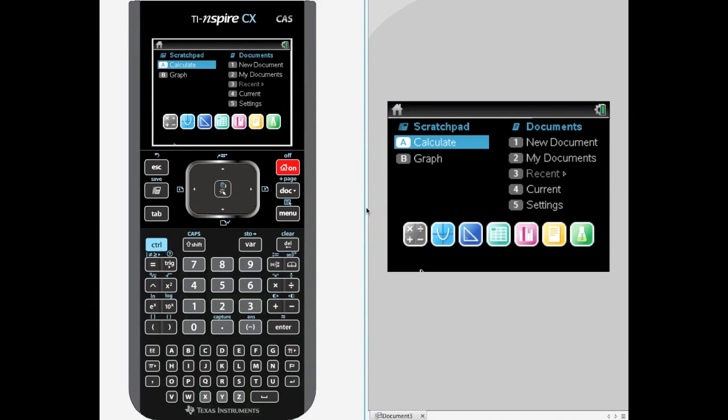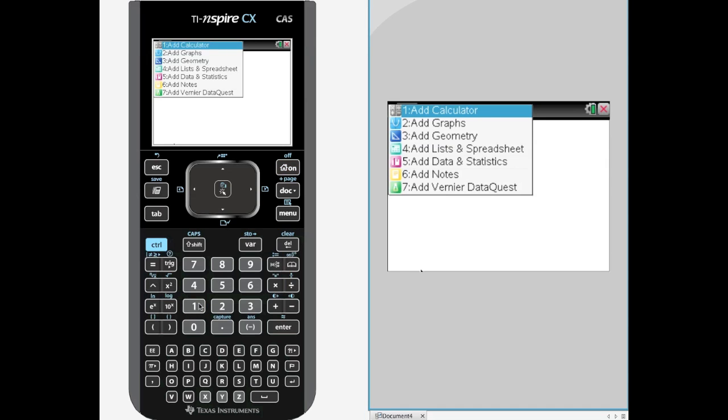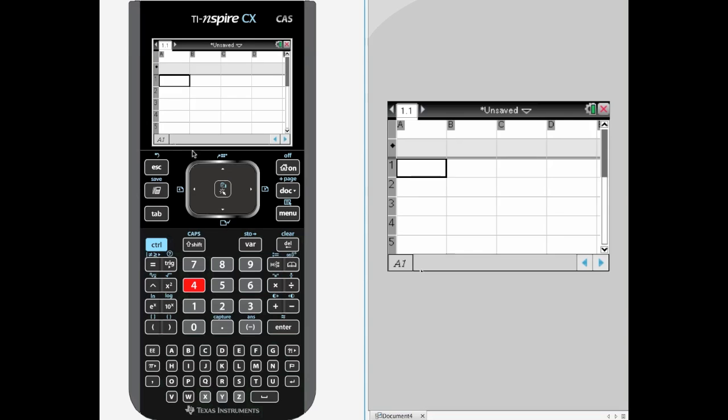We are going to get that goodness of fit test out of the way. Now it is a little bit more work to do this than just the chi-square test for a two-way table. We have to get a list in there for observed and expected. So we are going to create a new document. We are going to add lists and spreadsheets. We are going to arrow up to the top of this column and let's do OBS for observed. Arrow down.